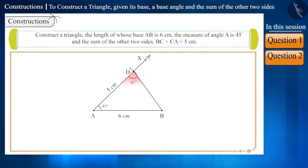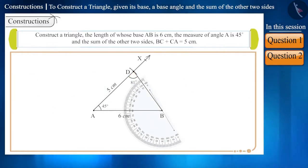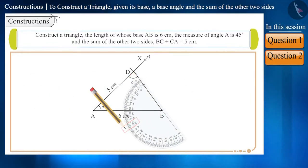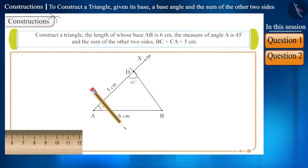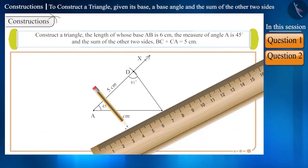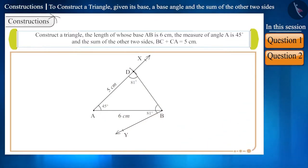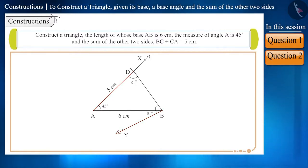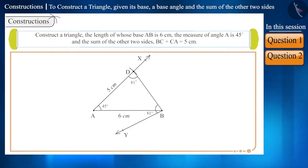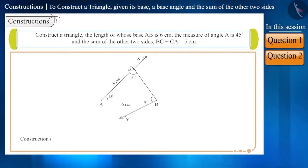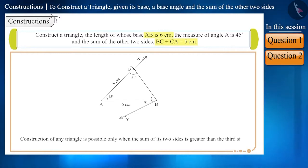Step 6: Now, from side BD, by making an angle of 81 degrees, we have to draw a ray BY. But here we see that ray BY doesn't intersect side AD anywhere. Construction of a triangle is not possible with this measurement. Therefore, construction of a triangle is possible only when the sum of its two sides is greater than the third side.